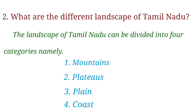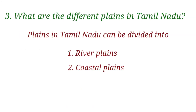What are the different lands? The landscapes of Tamil Nadu can be divided into four categories. And the third question is: what are the different plains in Tamil Nadu?